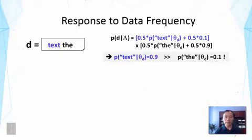What you're seeing now is basically the likelihood function for the two word document, and we know in this case the solution is to give text a probability of 0.9 and the a probability of 0.1.